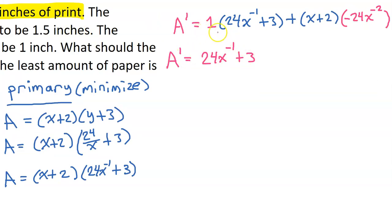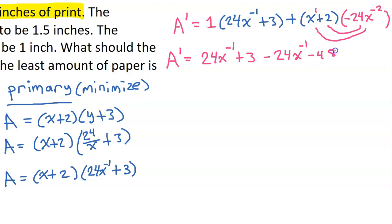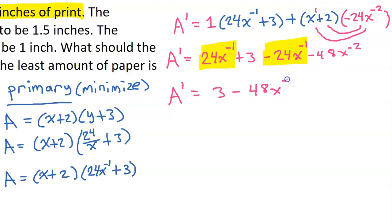Simplifying: I bring down 24X⁻¹ + 3, then distribute (X + 2) times (−24X⁻²). That gives −24X⁻¹ minus 48X⁻². The 24X⁻¹ terms cancel each other out, leaving A prime equals 3 minus 48X⁻², which I rewrite as A prime = 3 − 48/X².